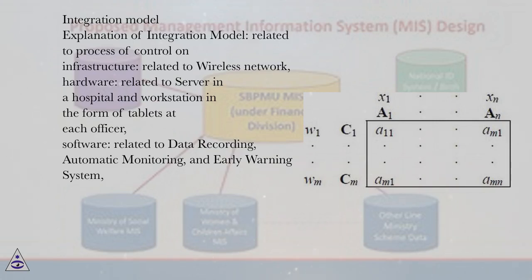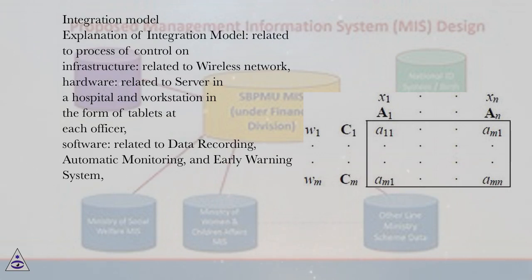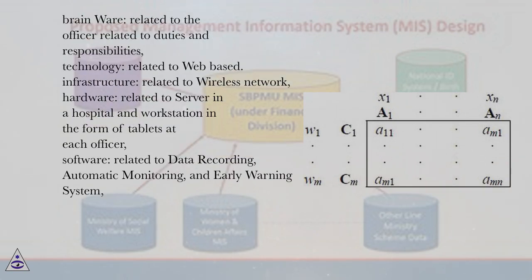Integration Model: Explanation of the Integration Model related to the process of control. Infrastructure is related to wireless network. Hardware is related to server in a hospital and workstation in the form of tablets at each officer. Software is related to data recording, automatic monitoring, and early warning system. Brainware is related to the officer's duties and responsibilities.